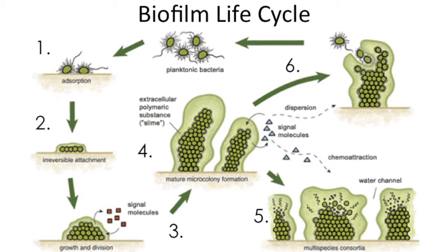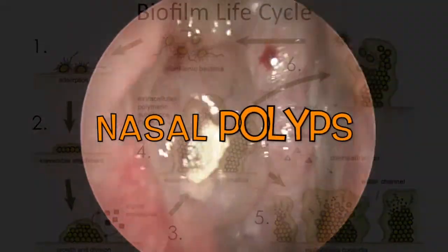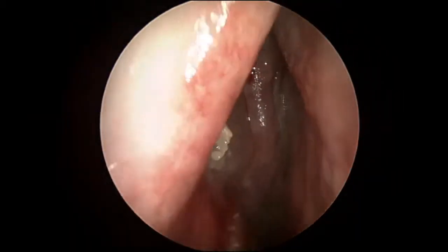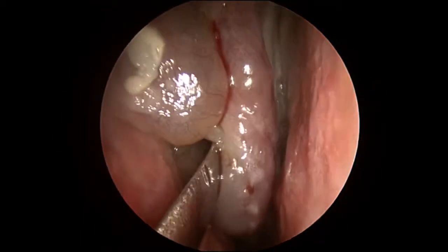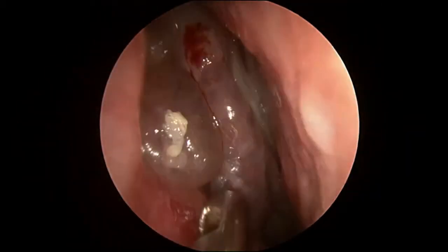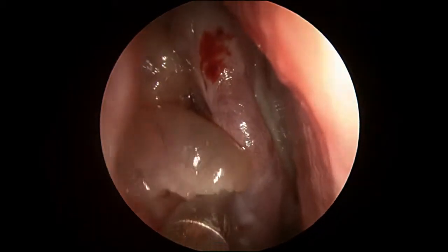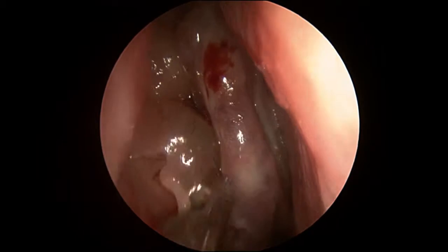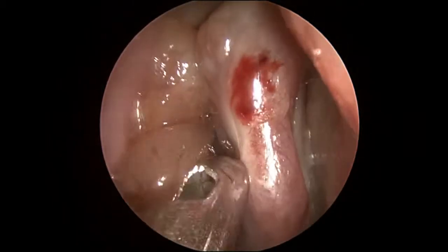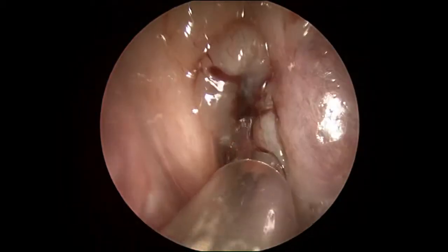Biofilm formation is also seen in nasal and sinus polyps. Polyps are soft, non-cancerous growths in the nose and sinuses that can grow very large and block the nasal passages, sinuses, and even your sense of smell. Notice there is no mention of bacteria responsible for building the biofilm that enlarges into polyps, despite DNA testing showing the bacteria in the polyps. Even H. pylori, a stomach bacteria, is found in sinus polyps and ear infections through DNA testing.